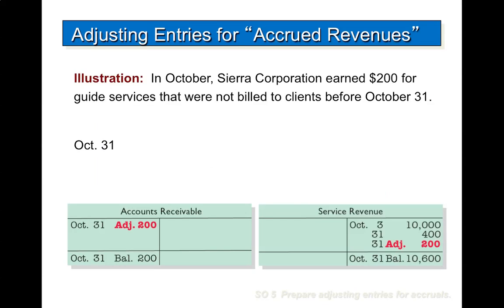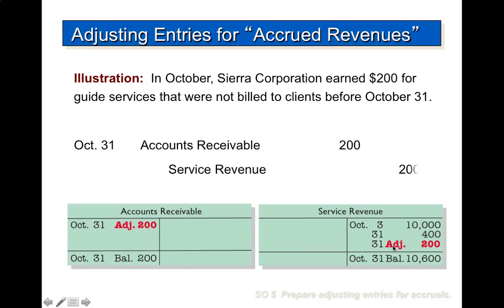As an example, going back to our Sierra Corporation: in October, Sierra earned $200 for guide services that were not billed to clients before October 31. So our adjusting entry is to debit accounts receivable and credit service revenue. Here is how it looks in the journal, followed by our T-account posting, so you can see how our balances have changed.